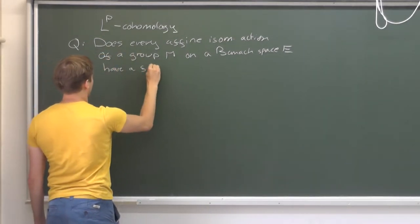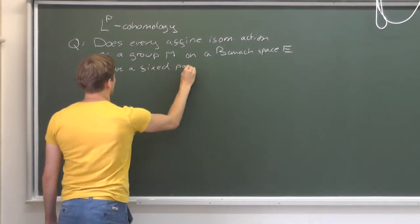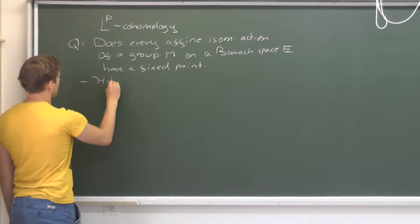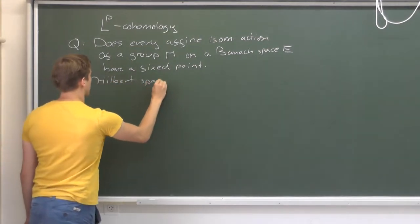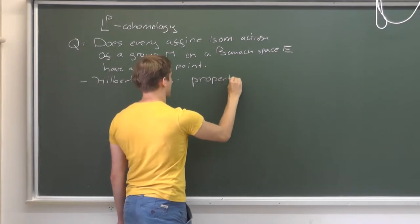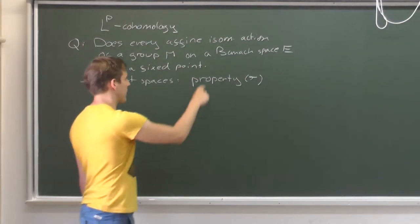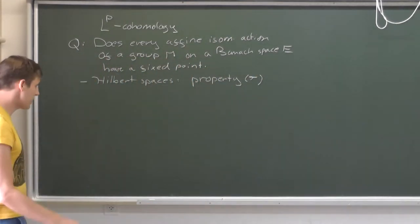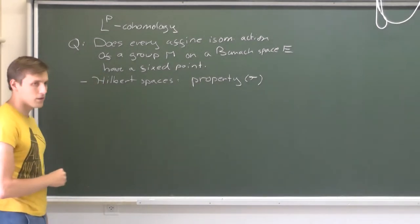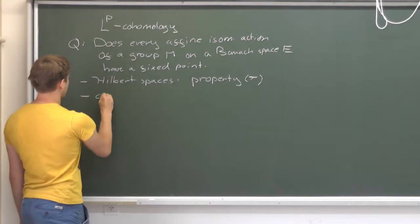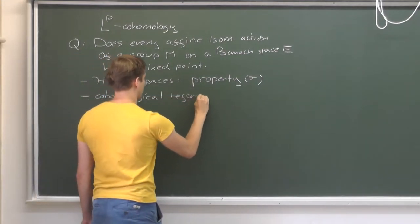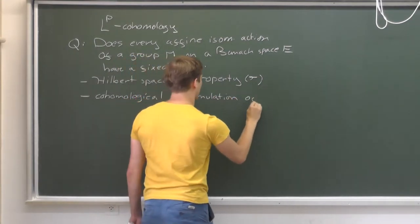Such questions have been classically studied in Hilbert spaces, and the relevant property is what's called Kazhdan property T, replacing the Banach space by a Hilbert space. Relatively few groups, in some sense, satisfy this property. To approach this general question of existence of fixed points, we will do a homological reformulation of the question.